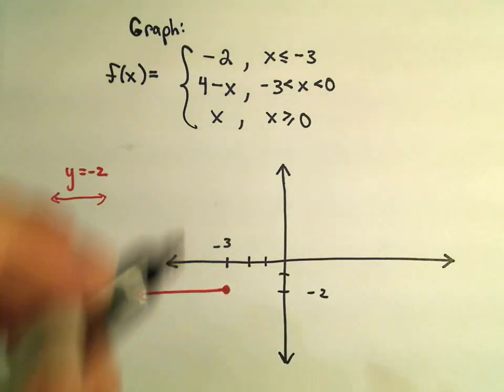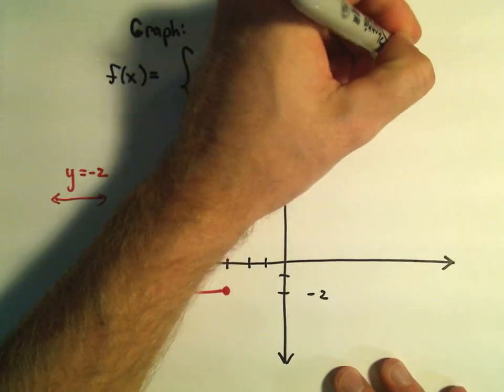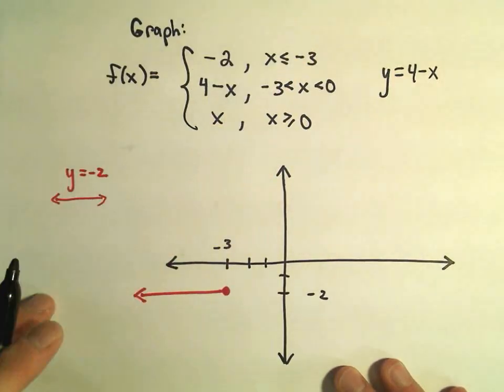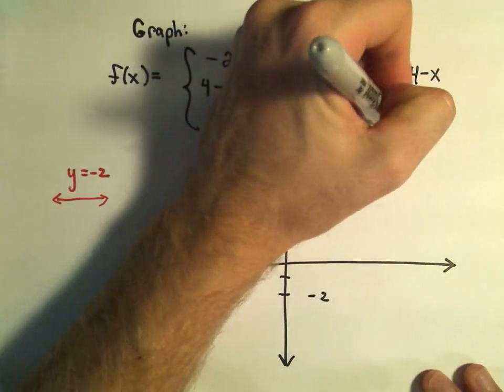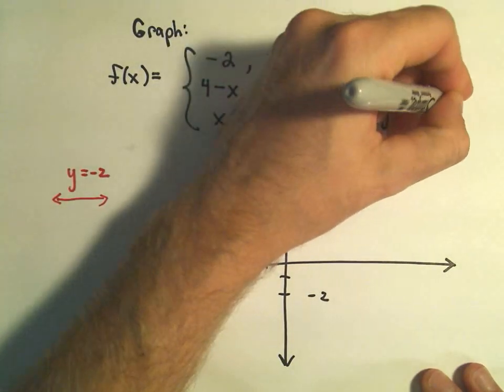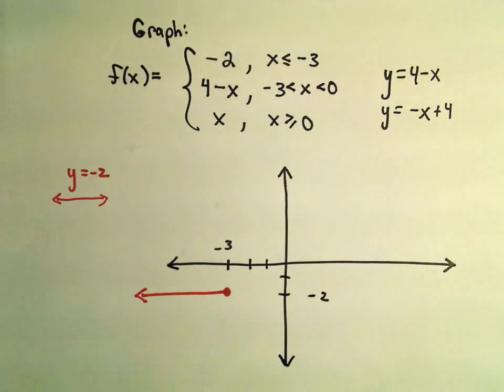I recognize the second equation, y equals 4 minus x. That's simply a line. We could actually rewrite this as negative x plus 4. That's a line with a y intercept of positive 4.